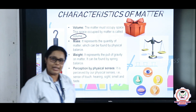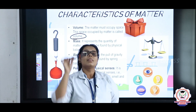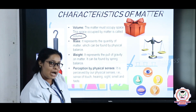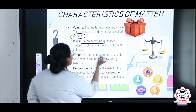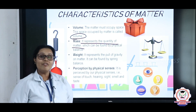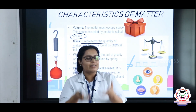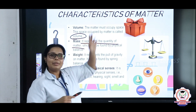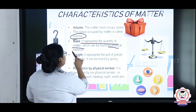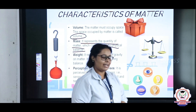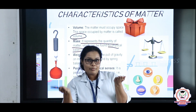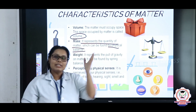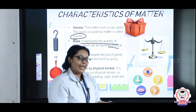The second characteristic is mass. Now I am taking this pen — if I leave it, it will go down, because it is having some kind of weight, or you can call it mass. Mass represents the quantity of matter — how much amount of matter is present. Mass can be found using a physical balance. In the physical balance, you can see two weights, and using those weights we can find the exact weight of the pen.